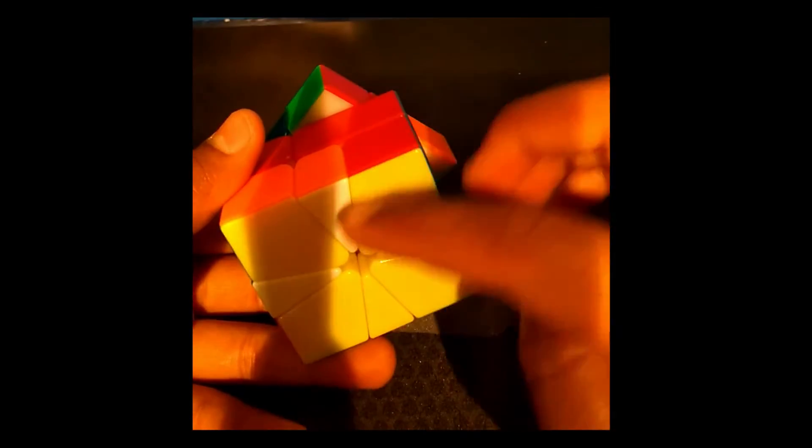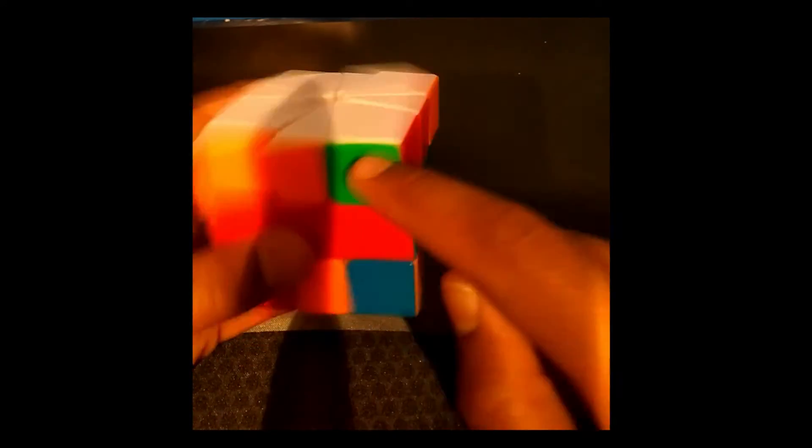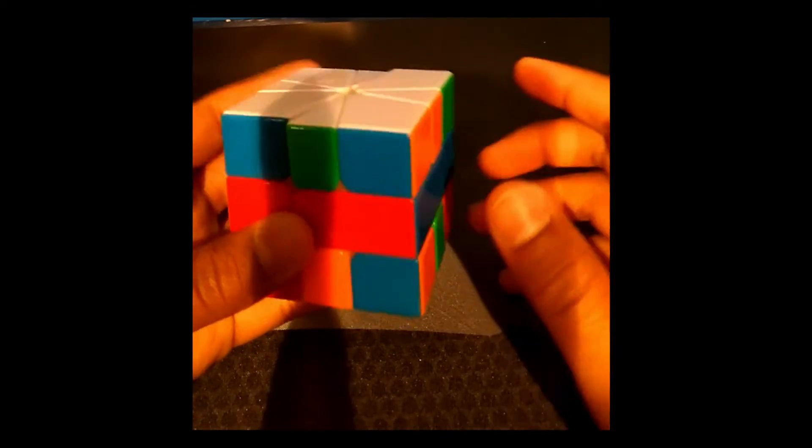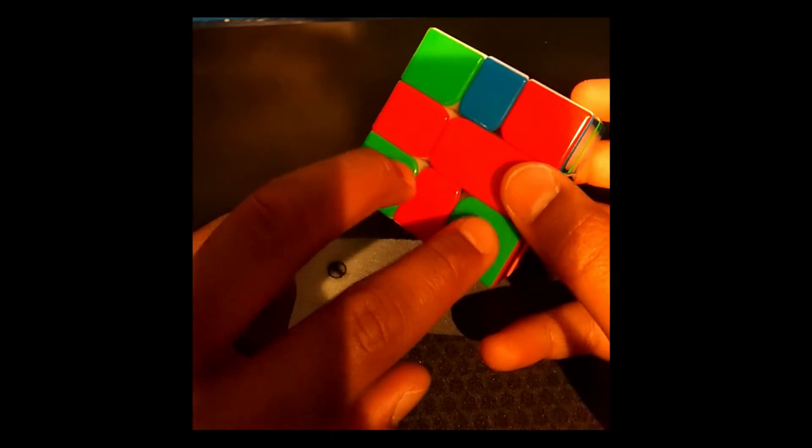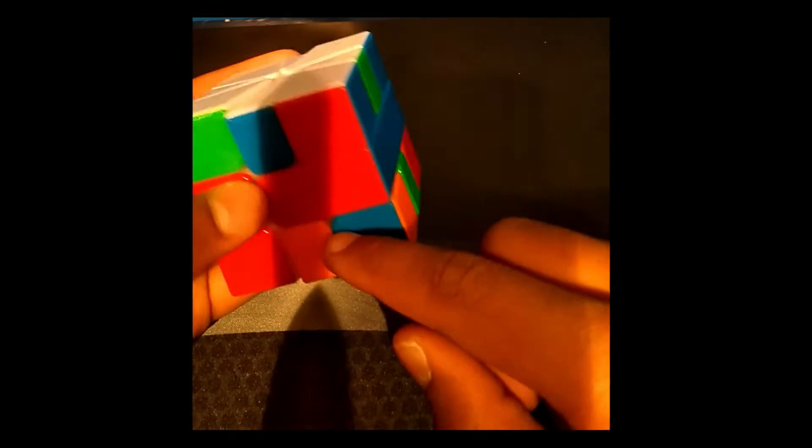But eventually I managed to make it about to here, bring that over. So now I had this edge orientation which I could do. So up here I saw headlights bar, headlights and bars, that means R perm, and then other bars, that's parity. And at the bottom I see headlights and a bar which is G perm, which is not parity, so I got a parity solve.